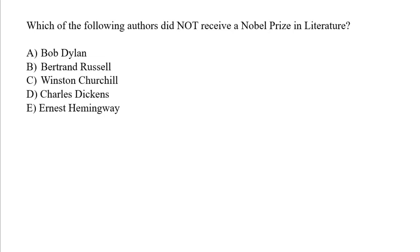The trick in this question is the following: the Nobel Prize only started getting awarded in the 1900s onwards, and one of these authors is not from the 1900s — Charles Dickens was active in the 1800s and he died in the 1800s, so he cannot have won the Nobel Prize. So if they're going to ask you a trick question, it'll be something like this, but really this isn't even a trick question — it just requires you to think a bit.